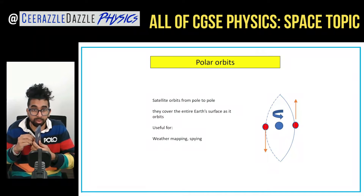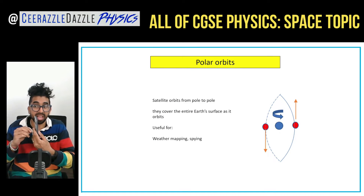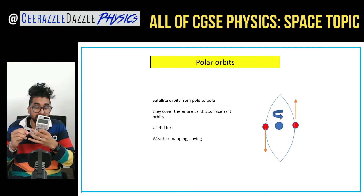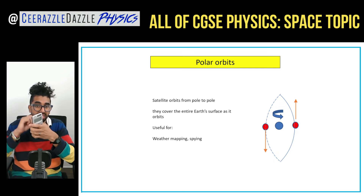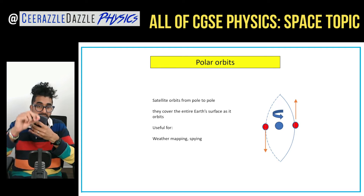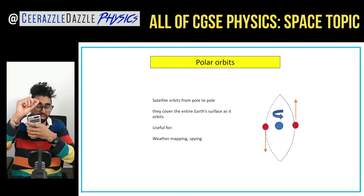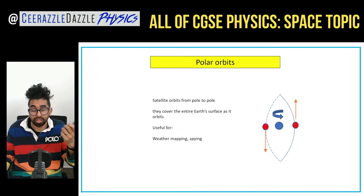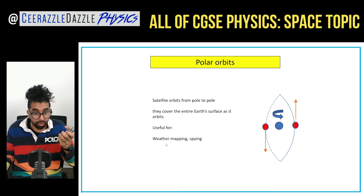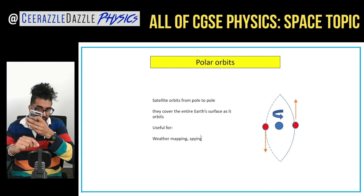Polar orbits are different. As the Earth turns around, the satellite doesn't move with it — it actually sweeps from pole to pole. The reason why you want this is because it can be used to cover the entire world. It's useful in weather mapping and for monitoring other countries, because you can look at what every country is doing.